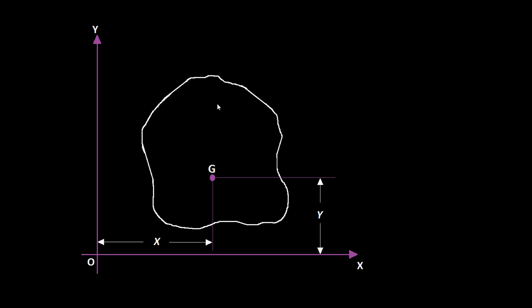The moment of an area about an axis is the product of the area itself and the distance between its centroid and the axis with reference to which the moment is to be calculated. So you can find the moment of either an area, a volume, or a mass if you know the centroid or center of gravity of it.